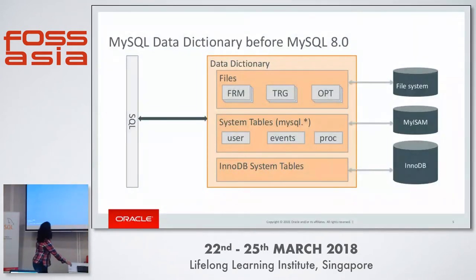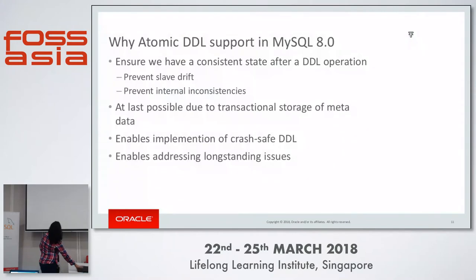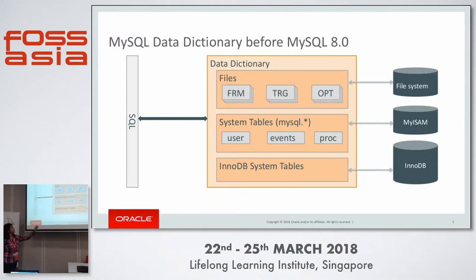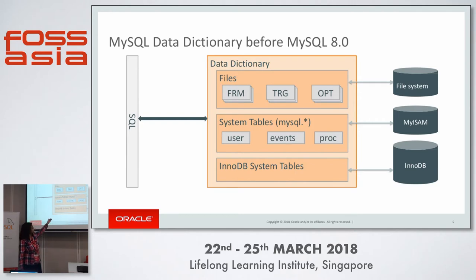If you look at prior to MySQL 8.0, we stored data dictionary information — metadata — in different formats. The metadata related to a table is stored in .frm files. If it is a trigger, it is stored in a .trg file. For the schema, we store it in a .opt file. These are all flat file systems. For non-table specific objects like users, events, procedures, and functions, these are stored in MyISAM tables, which are non-transactional. And if using InnoDB as the storage engine, there is a duplicate copy of metadata stored in a system table.